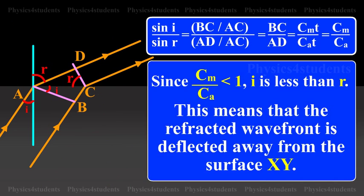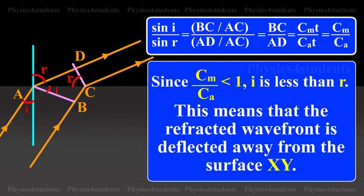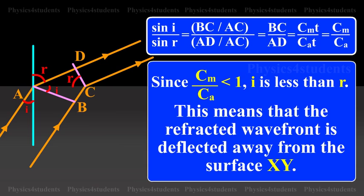Since Cm by Ca is less than 1, i is less than r. This means that the refracted wavefront is deflected away from the surface XY.